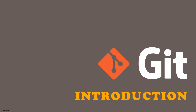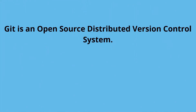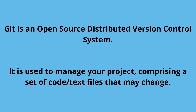Hello everyone. Today we will take a look at why we use Git and what Git is. Git is open source and free to use, and the second thing is it's a distributed version control system. Later in this video we will take a look at what a distributed version control system is. Git is used to manage your project comprising a set of code or text files that may change, and one thing is that we track the changes in the project.